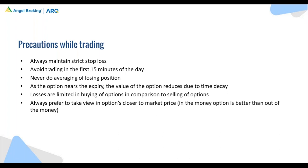Never ever average on your losing position. Remember, whenever you average on a losing position, you are adding quantity, and if the stock still does not favor you, the loss will be bigger. Unless you have strong risk management in mind, never go ahead and average on your losing position. Another important thing to remember is the value of an option reduces at a fast pace in the last two weeks of expiry. If you are a buyer of an option, look at the first two weeks of the month to trade. When nearing expiry by one or two weeks, shift yourself to the next month because of the theta factor.